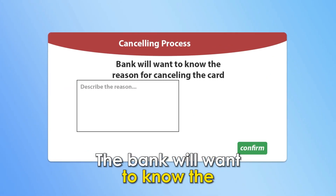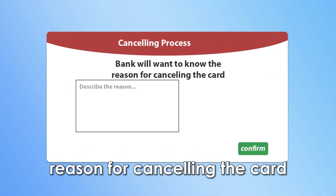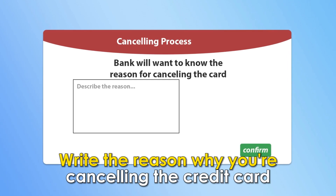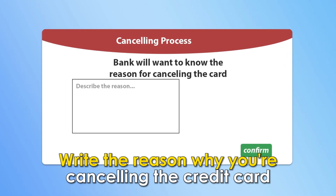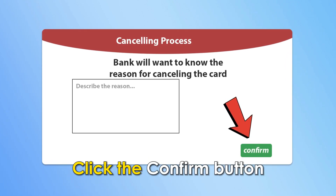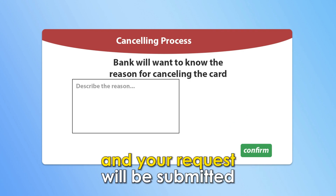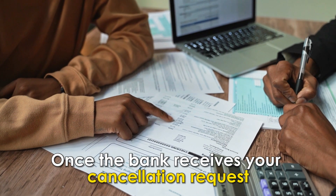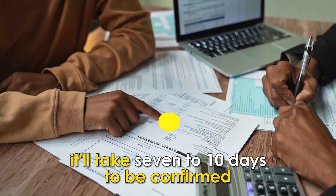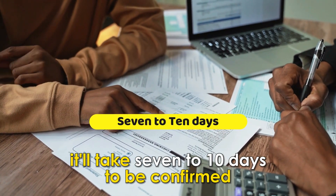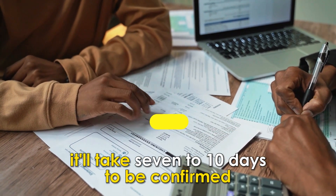The bank will want to know the reason for cancelling the card. Write the reason why you're cancelling the credit card. Click the Confirm button and your request will be submitted. Once the bank receives your cancellation request, it'll take 7 to 10 days to be confirmed.